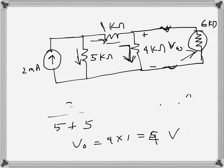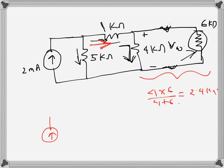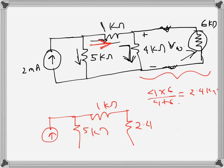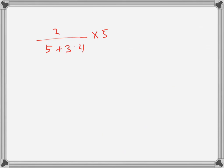We can treat the voltmeter as a 6 kilo ohm resistance connected across the 4 kilo ohm one. The parallel combination of 4 and 6 is 4 times 6 over 4 plus 6, which equals 2.4 kilo ohms. Our circuit is now 5 kilo ohms, then 2.4 kilo ohms, then 1 kilo ohm, with a 2 milliamp source. The current through the 1 kilo ohm branch is 2 over 5 plus 3.4, times 5, which gives 1.2 milliamps.